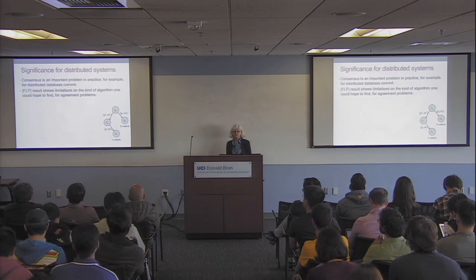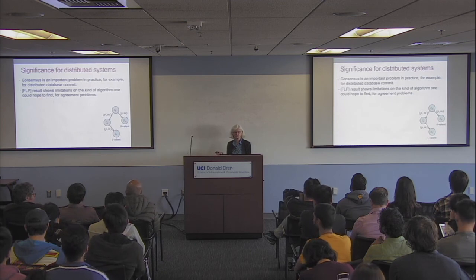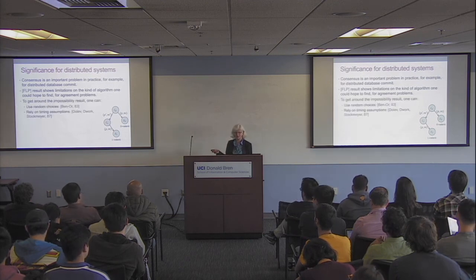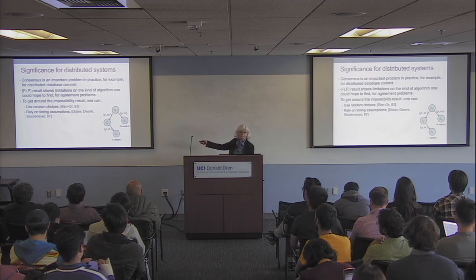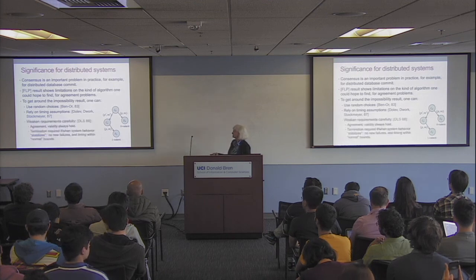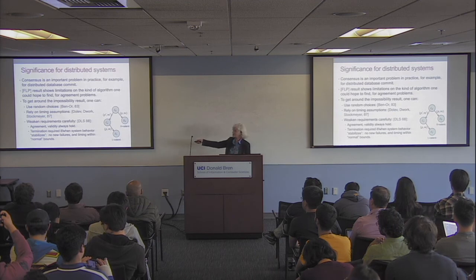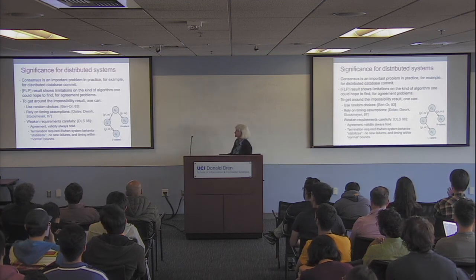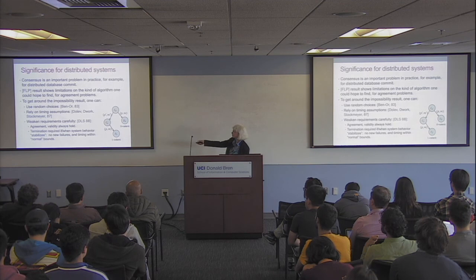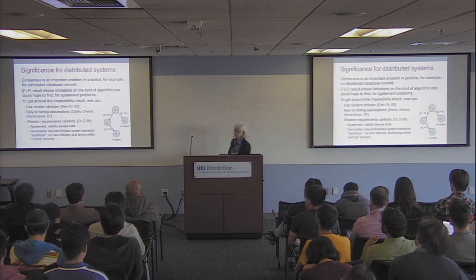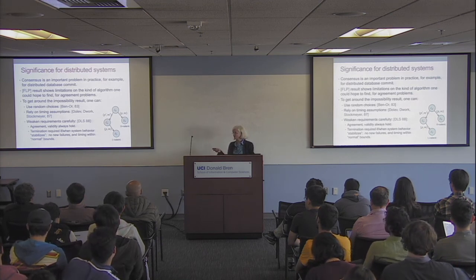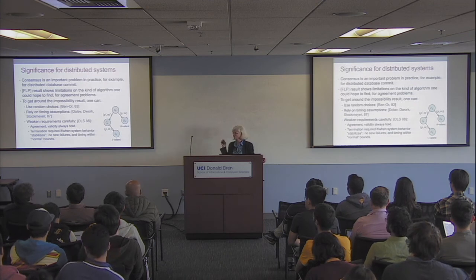The significance for distributed systems: this is an important problem in practice for database commit. This basically shows limitations on the kind of algorithm you could hope to find. How do you get around it? You could use random choices for consensus with high probability, you could rely on timing assumptions, or you could weaken the requirements — requiring safety properties to always hold, but requiring termination only when the system stabilizes. The rest of this talk covers other impossibility results for timing-dependent systems and communication, including the CAP theorem, which many of you have heard about in your classes — a claim from the systems community that can be explained using theory. I'm out of time, but I'll give you the slides.